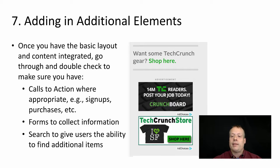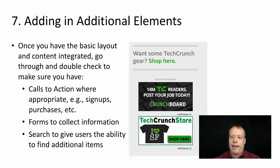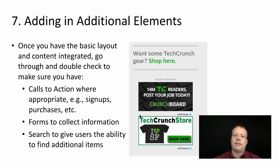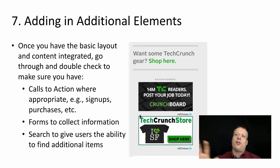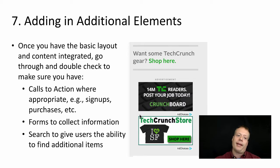On that same TechCrunch page, if you scroll down the sidebar, they have things like 'Want some TechCrunch gear? Shop here,' 'Join our Crunch Board where people post their jobs,' and 'Go buy stuff at our store.' These are all calls to action on the side. You need to think about how those are designed — are they on every page? Where are they on the page? How do they really integrate with the rest of the website design?